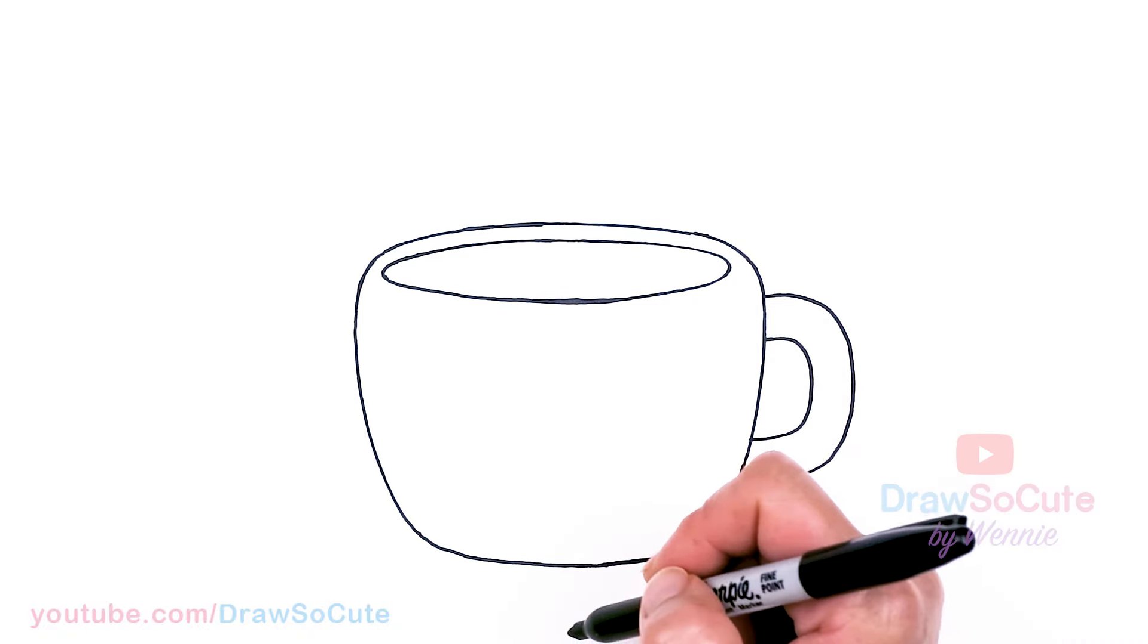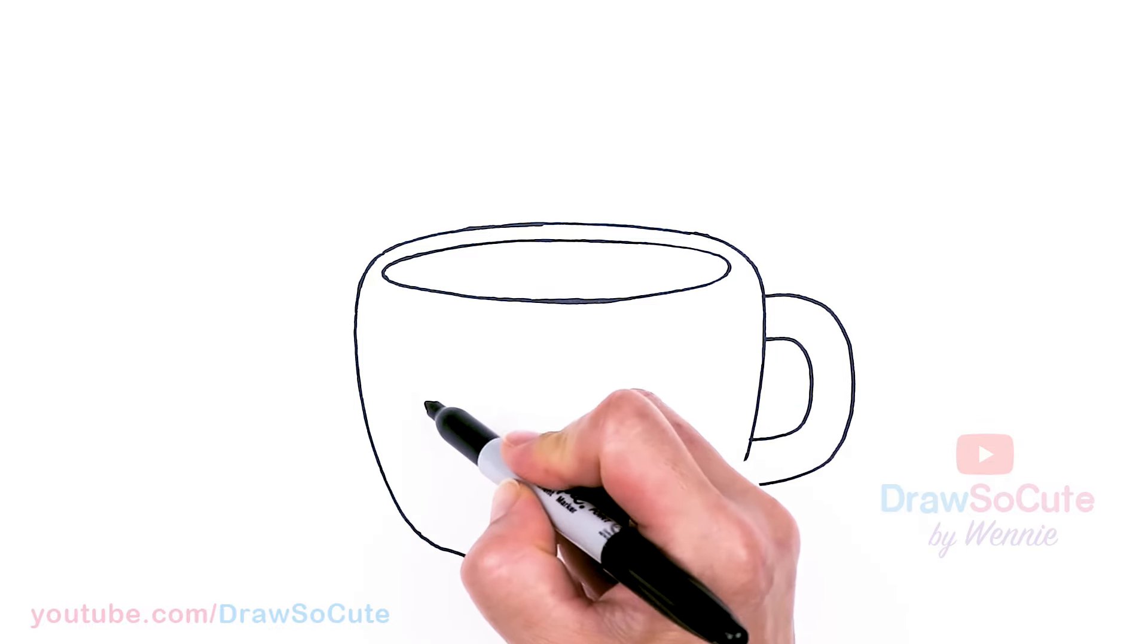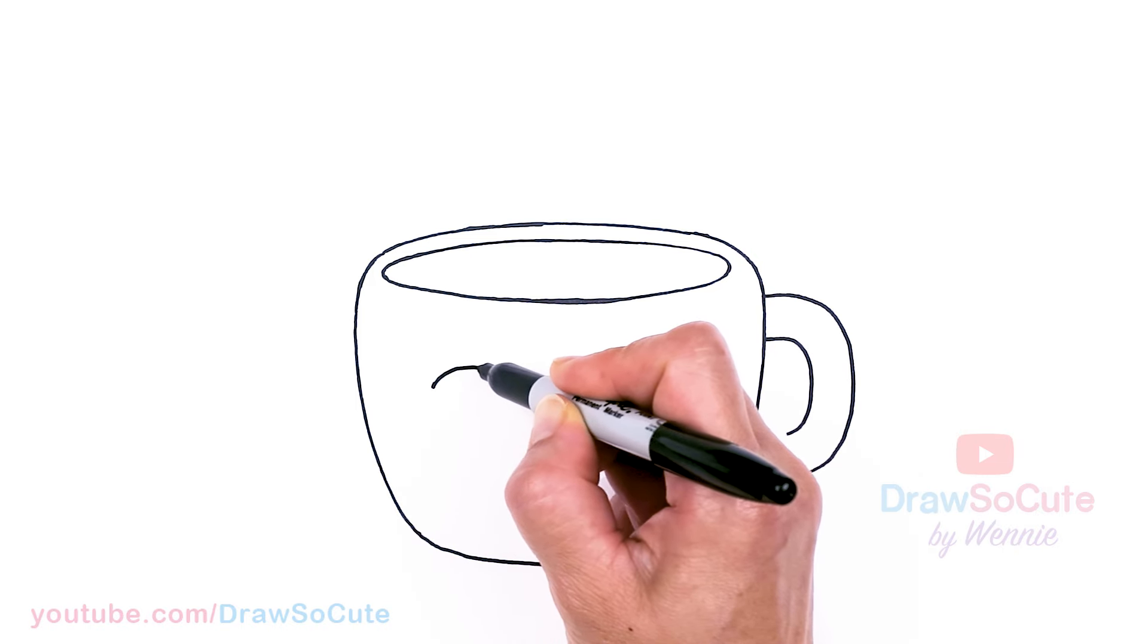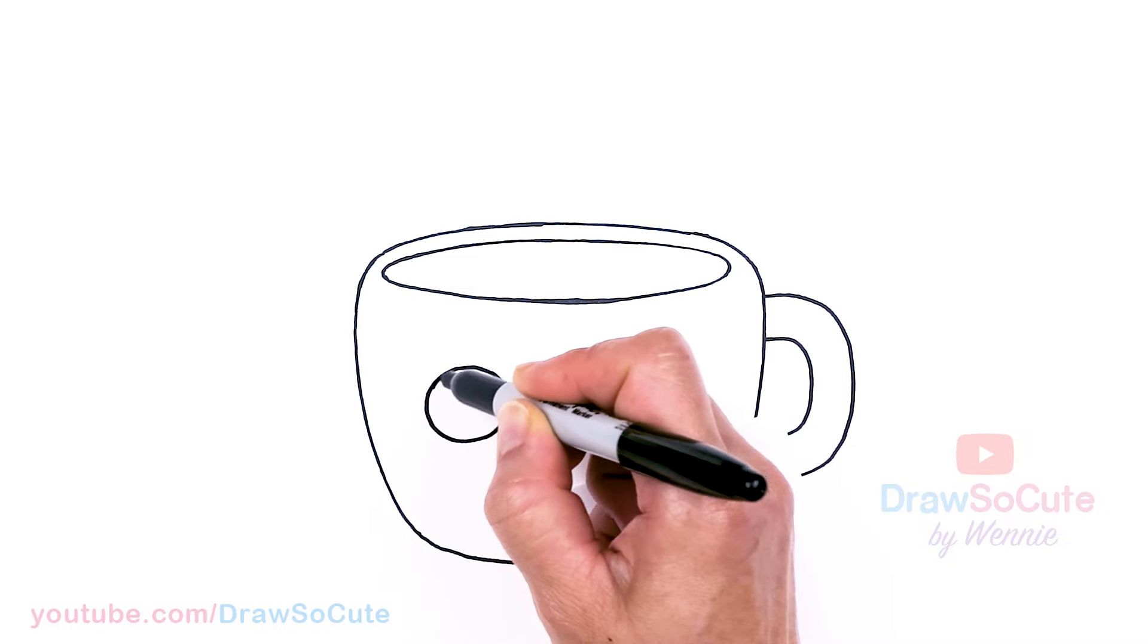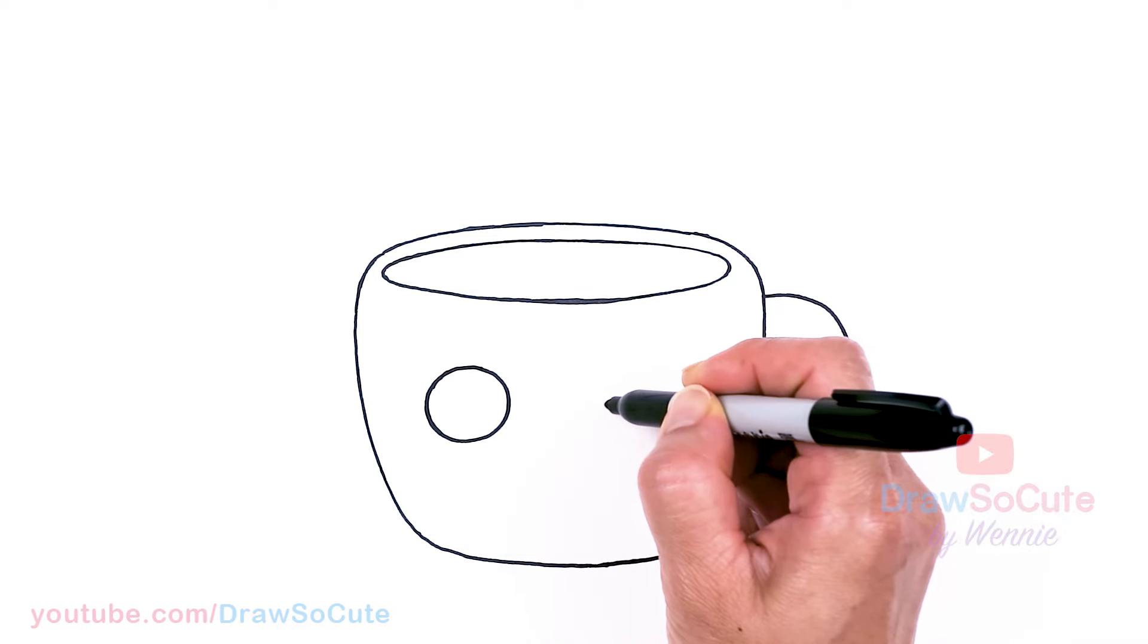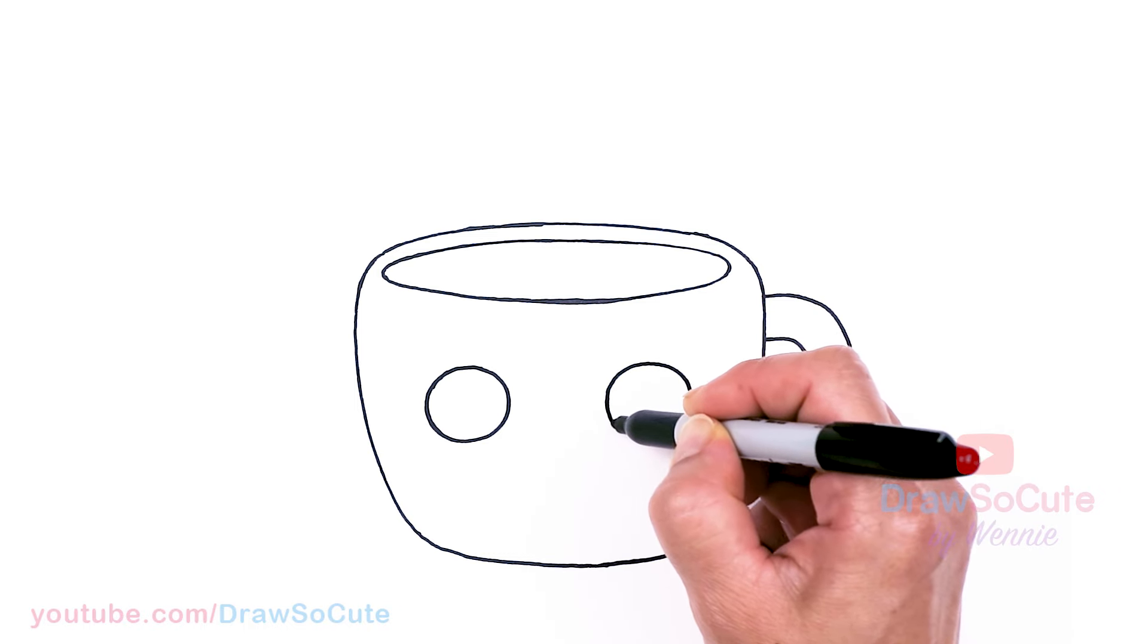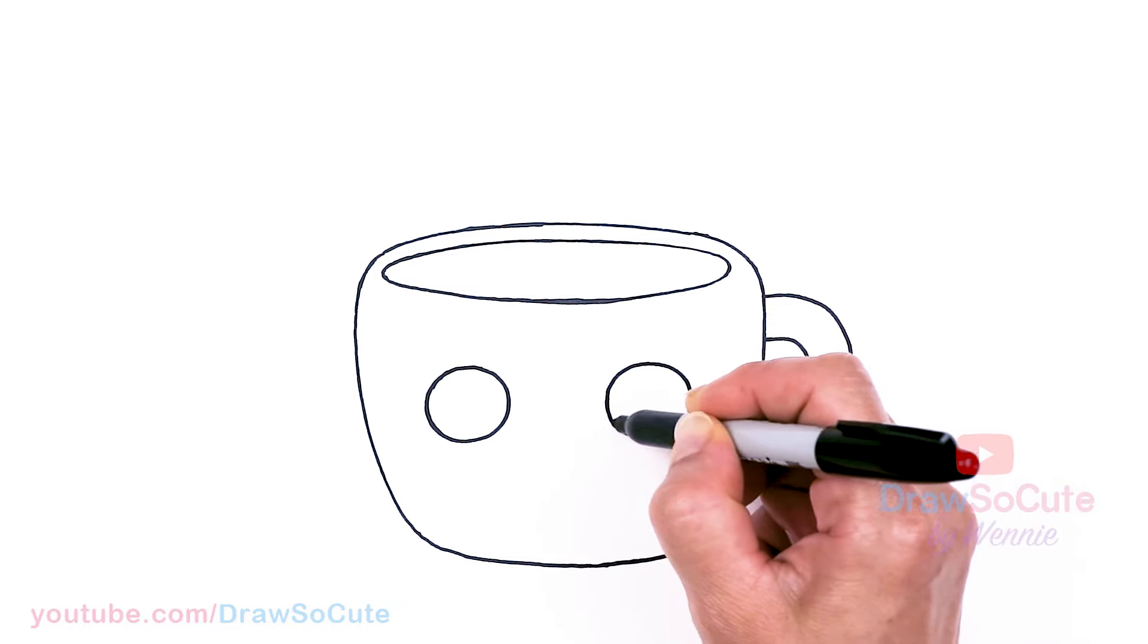Then from there let's bring it to life to make this a Draw So Cute cup of latte. If you want to do that, let's come about right here towards the center. I'm going to go ahead and draw a nice big circle. And then I'm going to come right across about right here and draw another circle.